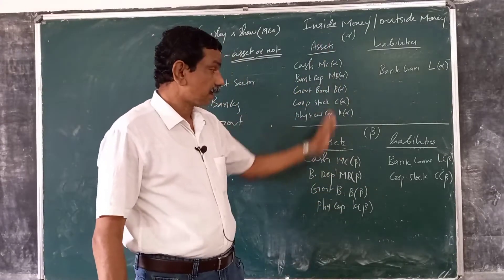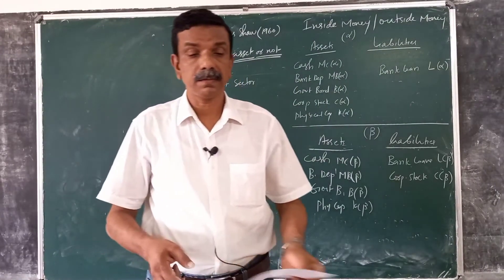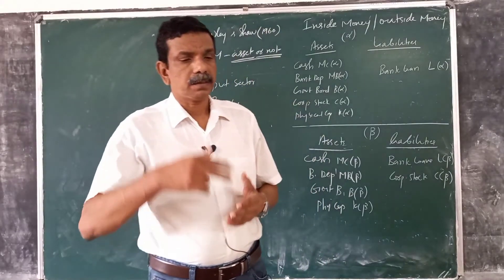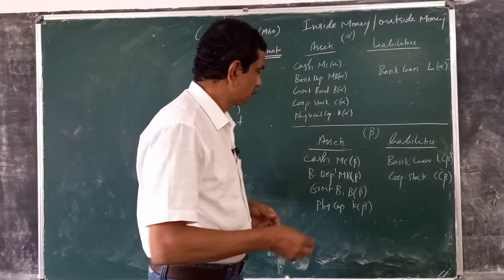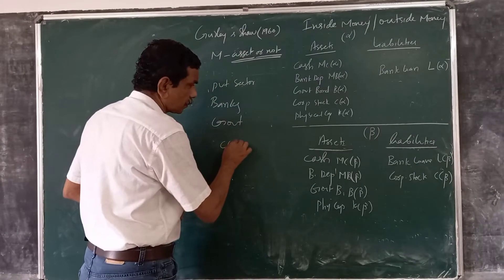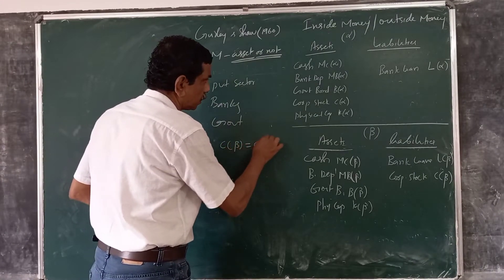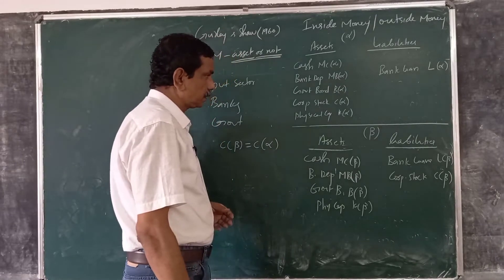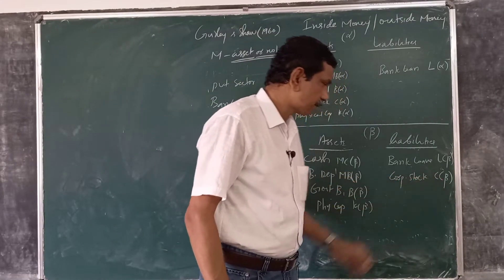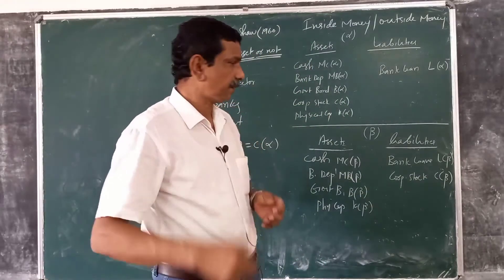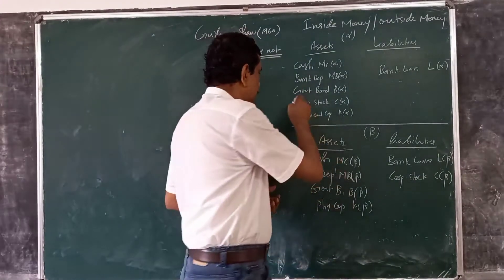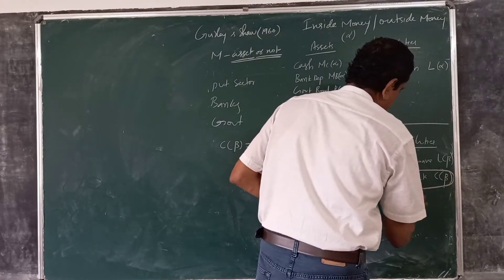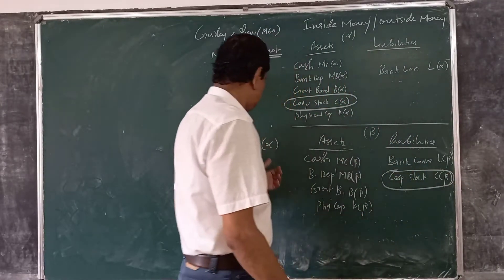The private sector consists of firms and individuals. For simplicity, we assume that C_beta is equal to C_alpha — that is, the entire corporate stock issued by the firms is held by the individuals.